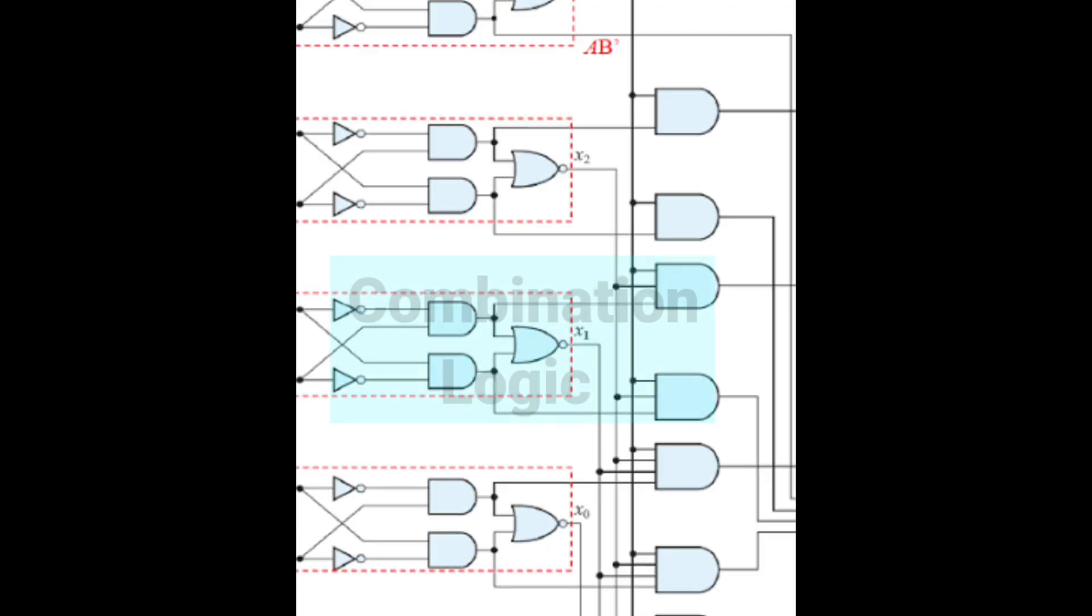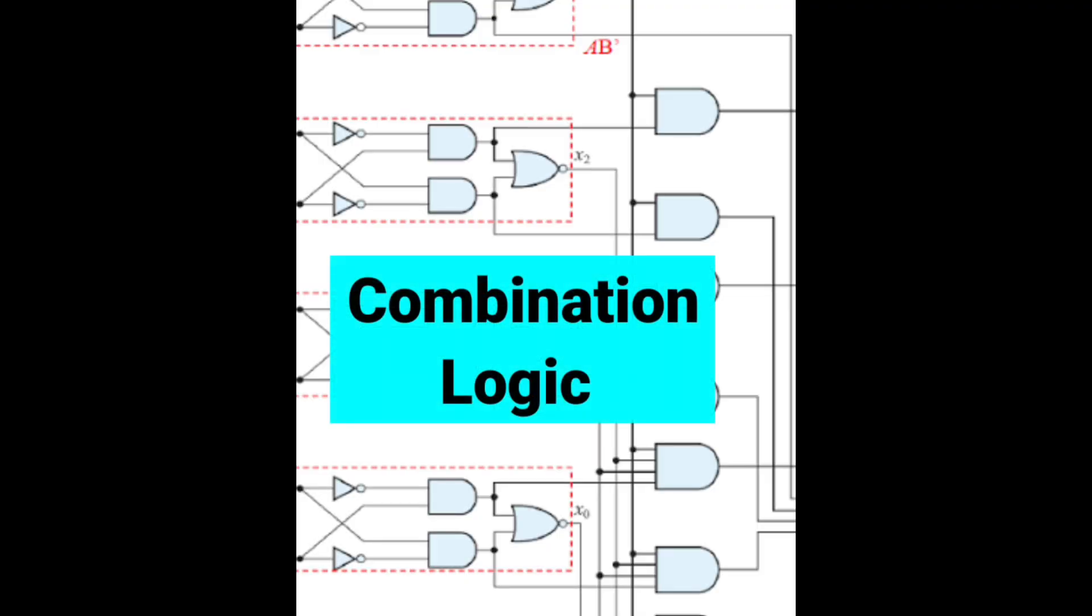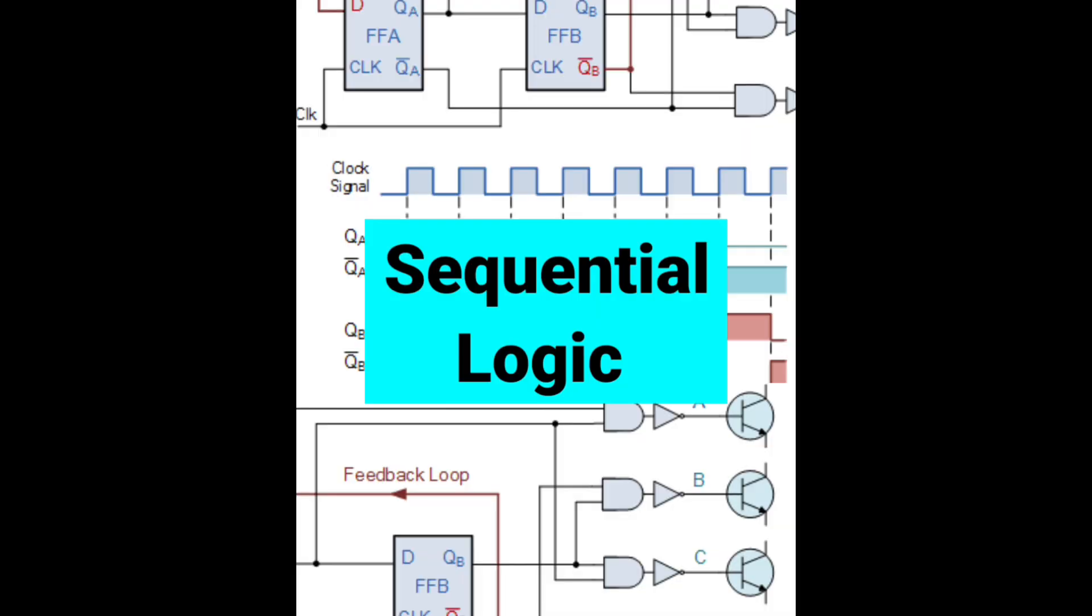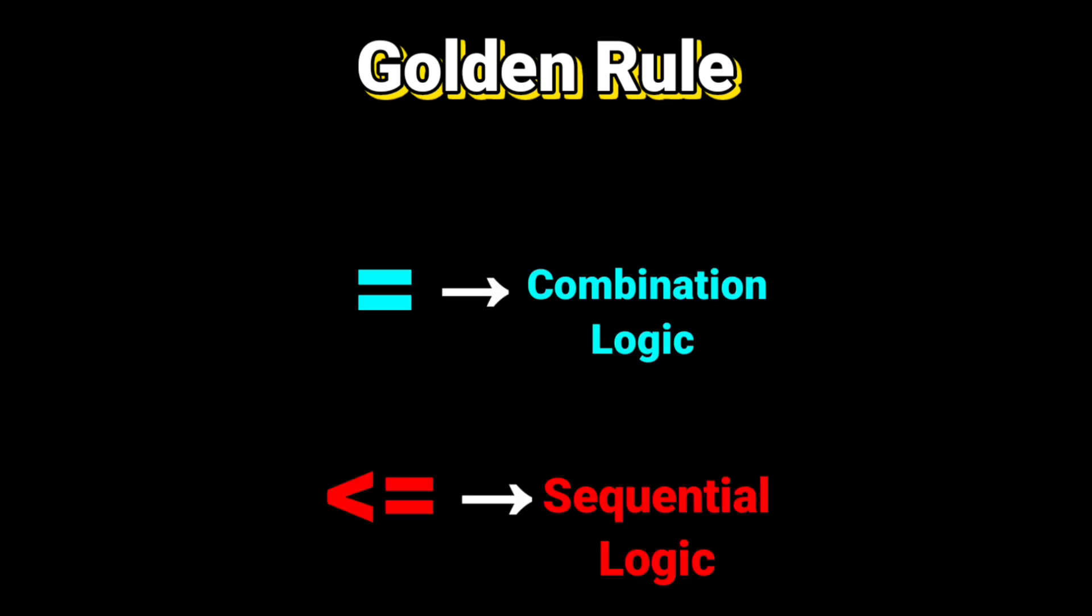Blocking is used in combinational logic because step-by-step execution matches the equations. And in sequential logic we use non-blocking because flip-flops update together on the same clock edge, just like real hardware. So here's the golden rule: Use blocking for combinational logic and use non-blocking for sequential logic. If we mix them together, they can cause race around conditions.